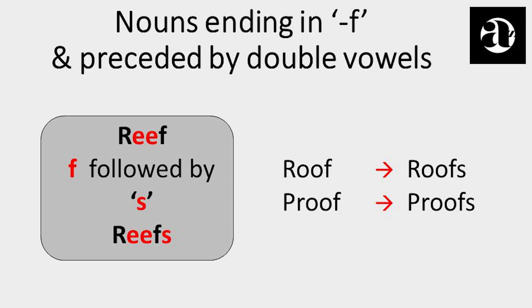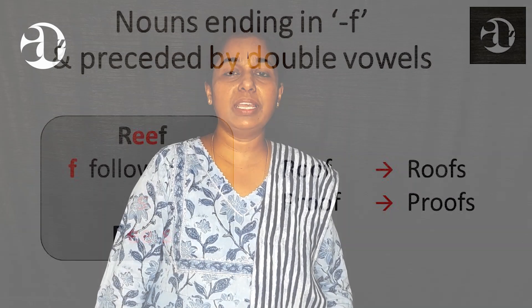But if the F is preceded by a double vowel such as OO or EE, then we add only an S next to F. For example, reef (R-double E-F) — the plural form is reefs, where we add an S next to F. Roof becomes roofs, proof becomes proofs. The same rule applies to some other nouns that end in F.